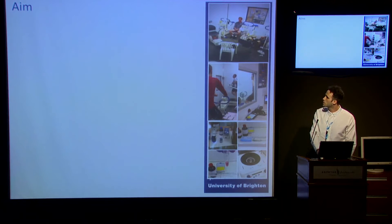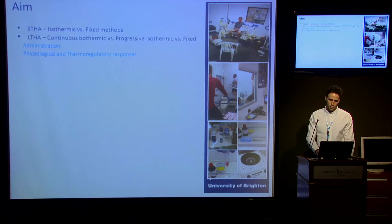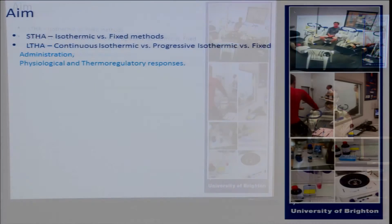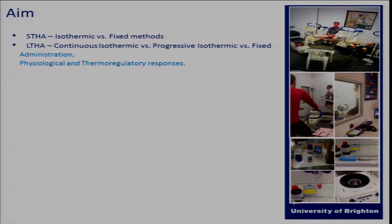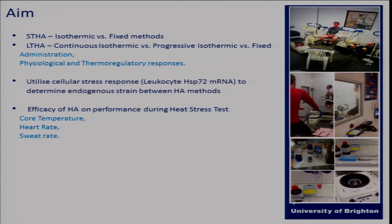The aims of this presentation are to compare an isothermic and fixed method of heat acclimation over a short-term period, and over a long-term period to compare a continuous isothermic model with a progressive isothermic and a fixed model. We'll consider administration and physiological and thermoregulatory responses, and also utilize the cellular stress response to determine levels of endogenous strain. Due to innate differences between protocols, a direct day-one-to-day-ten comparison isn't possible, so we'll compare efficacy on performance during a heat stress test.